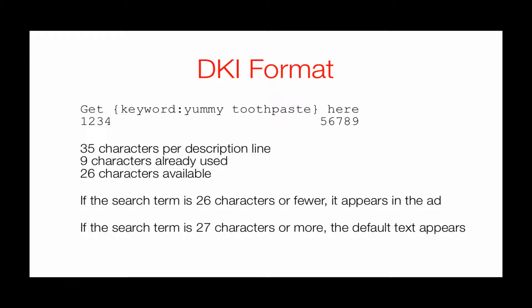If this is a description line, you get 35 characters. 'Get' is four characters with the space, and then whatever keyword they put in takes up the rest of it, and 'here' is another five. So you've got a total of nine characters used on this line — 35 available, nine already used — that means there's 26 left. So if the search term they type is 26 characters or fewer, it appears in the ad.